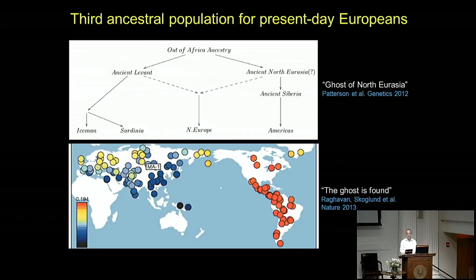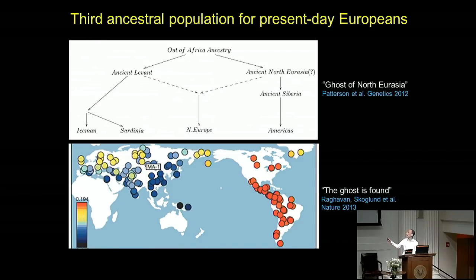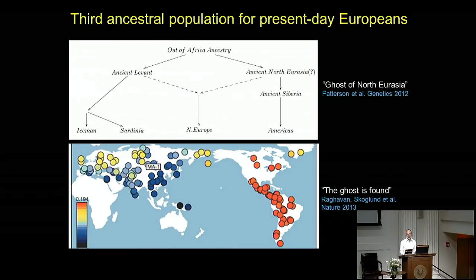What was very exciting was that a year later, this ghost population was found in bones. Willerslev's group found DNA from an individual — a little boy from 24,000 years ago, based on its radiocarbon date — from around Lake Baikal in Siberia, and it perfectly matched this predicted source population. It was a better match than Native Americans are. Since that time, we've found additional and more approximate populations to the source populations, both for Native Americans and for Europeans, related to this group. We now recurrently predict ghost populations statistically from the samples we have, and then often we find them.